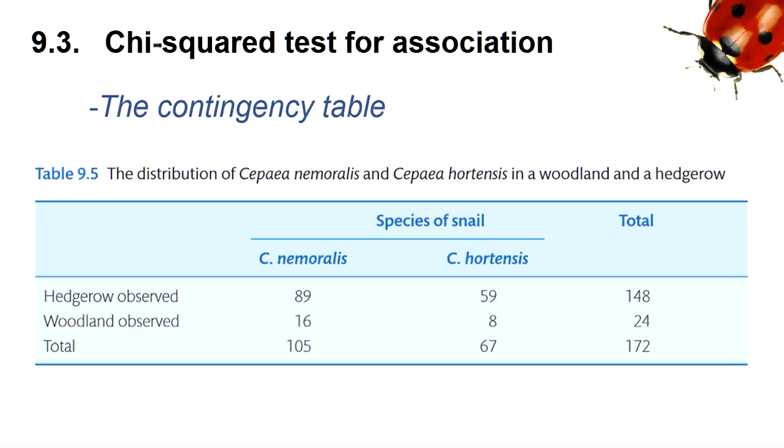For the latter factor, each observed snail was either found in the hedgerow or the woodland. Thus, each observation can be exclusively assigned to two categories, with each category being part of a different factor. We can then summarize the observations as counts associated with two specific factor categories, as shown in table 9.5.